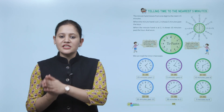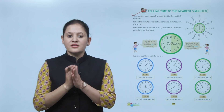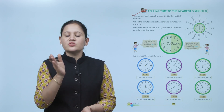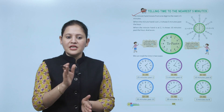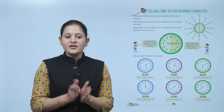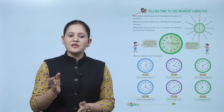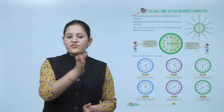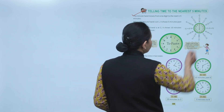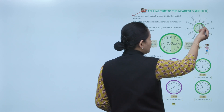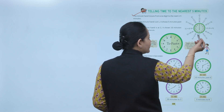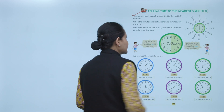Next, telling time to the nearest five minutes. The minute hand moves from one digit to the next in five minutes. When the minute hand is at 1 it shows five minutes past the hour; when at 2 it shows ten minutes past, and so on — 5, 10, 15, 20, 25, 30, 35, 40, 45, 50, 55, and 60.